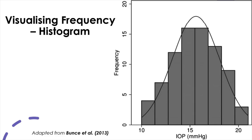Another way to visualize frequency information for continuous data — such as interval or ratio level of measurements — is to use a histogram. What we see here is a histogram of 80 observations of intraocular pressure, the pressure in the eye. It is typical that measurement values go on the x-axis and frequency information goes on the y-axis. With a large enough data set, a histogram can show the overall shape of the frequency distribution of the data. Please note that the bars are drawn to touch each other in a histogram, whereas bars in a bar graph are not — this is the major difference between them.